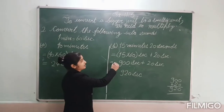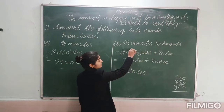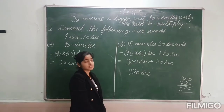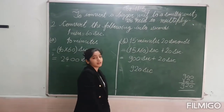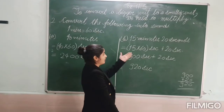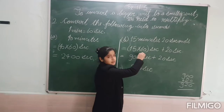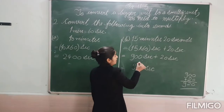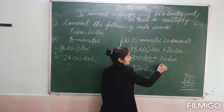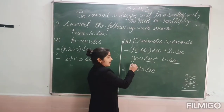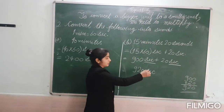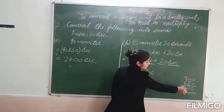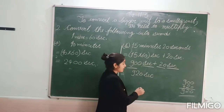The next example is 15 minutes 20 seconds. To convert into seconds, we multiply 15 minutes by 60, which gives us 900 seconds. Then we add the remaining 20 seconds: 900 plus 20 equals 920 seconds.